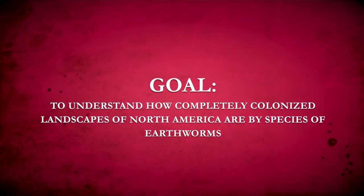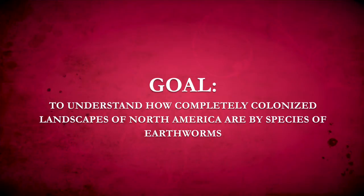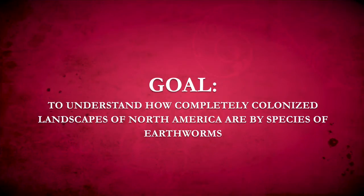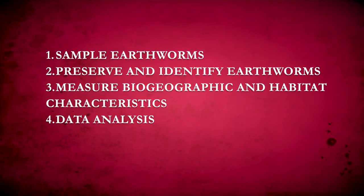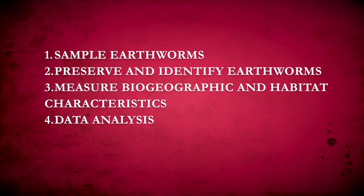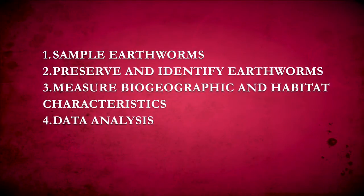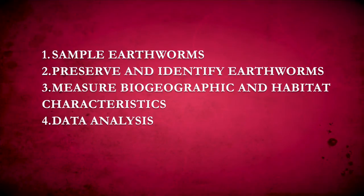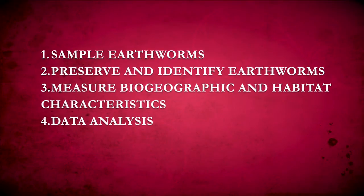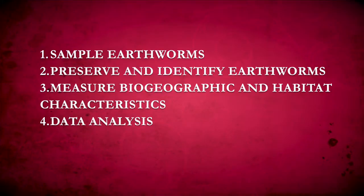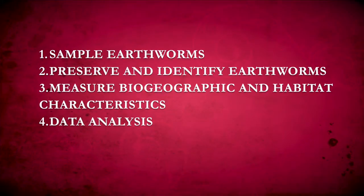Our approach is to compare the relative importance of biogeographic factors, which can affect earthworm dispersal, and habitat quality, which affects earthworm persistence in colonized habitats. The methods of the project include sampling of earthworms coupled with measurement of biogeographic and habitat characteristics, and data analysis. This first video describes the sampling of earthworms; additional videos describe the other aspects of the study.